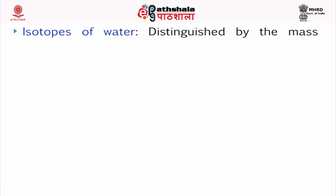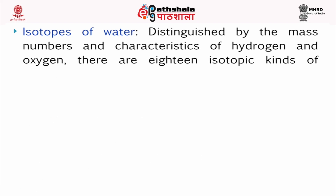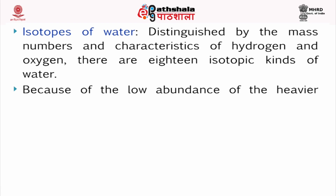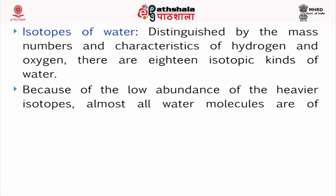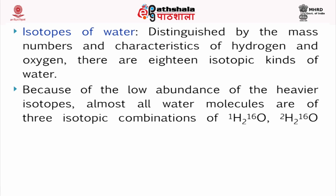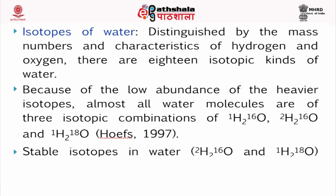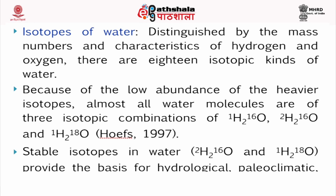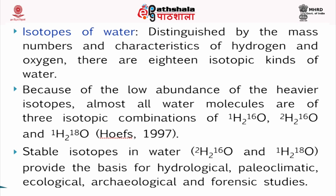Isotopes of water are distinguished by the mass numbers and characteristics of hydrogen and oxygen. There are 18 isotopic kinds of water. Because of the low abundance of the heavier isotopes, almost all water molecules are of three isotopic combinations: 1H2-16O, 2H2-16O, and 1H2-18O. The stable isotopes 2H2-16O and 1H2-18O provide the basis for hydrological, paleoclimatic, ecological, archaeological and forensic studies.